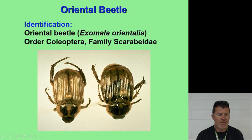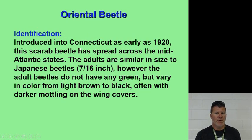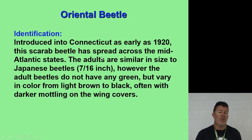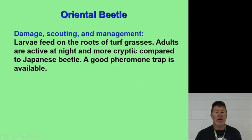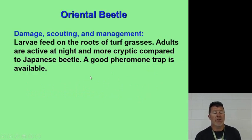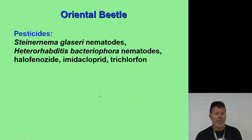The oriental beetle was introduced in Connecticut as early as 1920 and has spread across the mid-Atlantic states. Adults are similar in size to Japanese beetles but do not have any green coloring, varying from light brown to black, often with darker mottling on the wing covers. They feed on the roots of turf grasses and are more active at night and more cryptic than the Japanese beetle. A good pheromone trap is available. Pesticides include nematodes and similar chemicals used for the Japanese beetle.